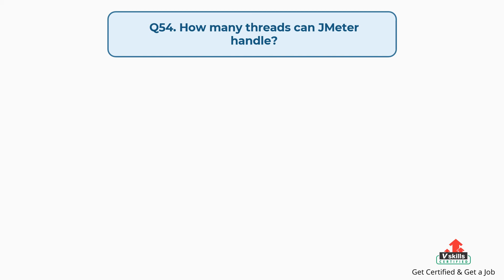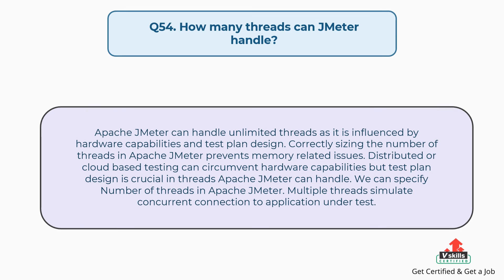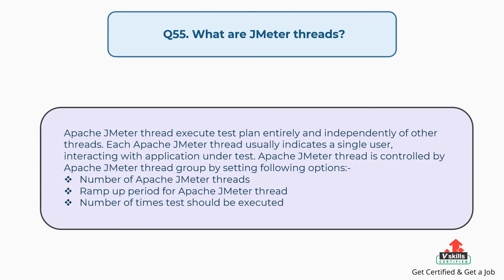Question 54: How many threads can JMeter handle? Apache JMeter can handle unlimited threads, as it is influenced by hardware capabilities and test plan design. Correctly sizing the number of threads prevents memory-related issues. Distributed or cloud-based testing can circumvent hardware limitations. Multiple threads simulate concurrent connections to the application under test.